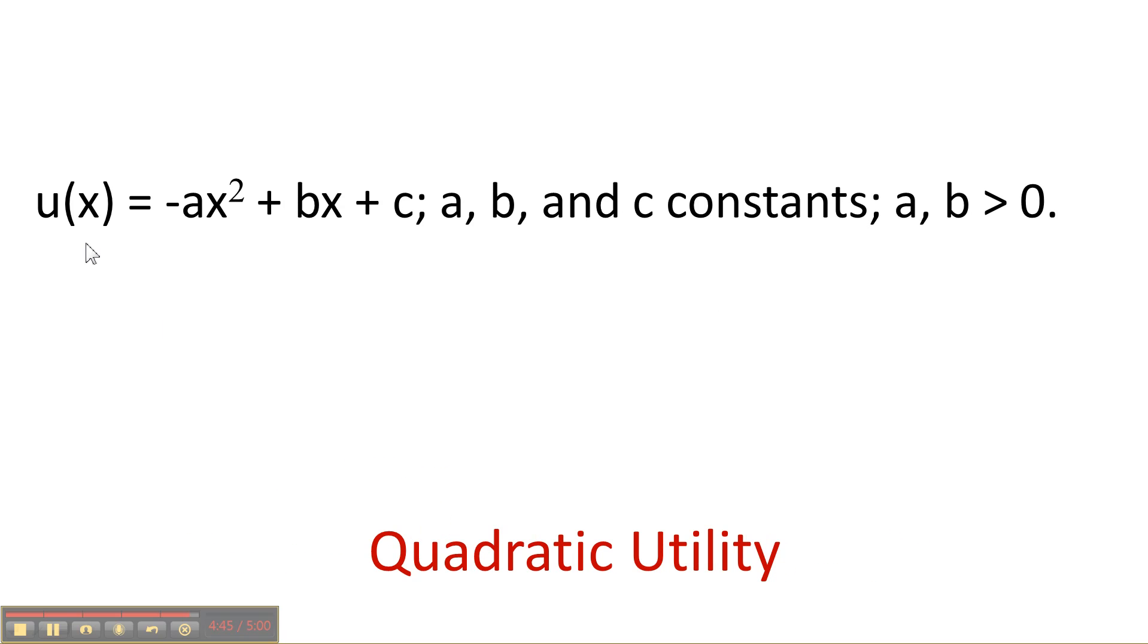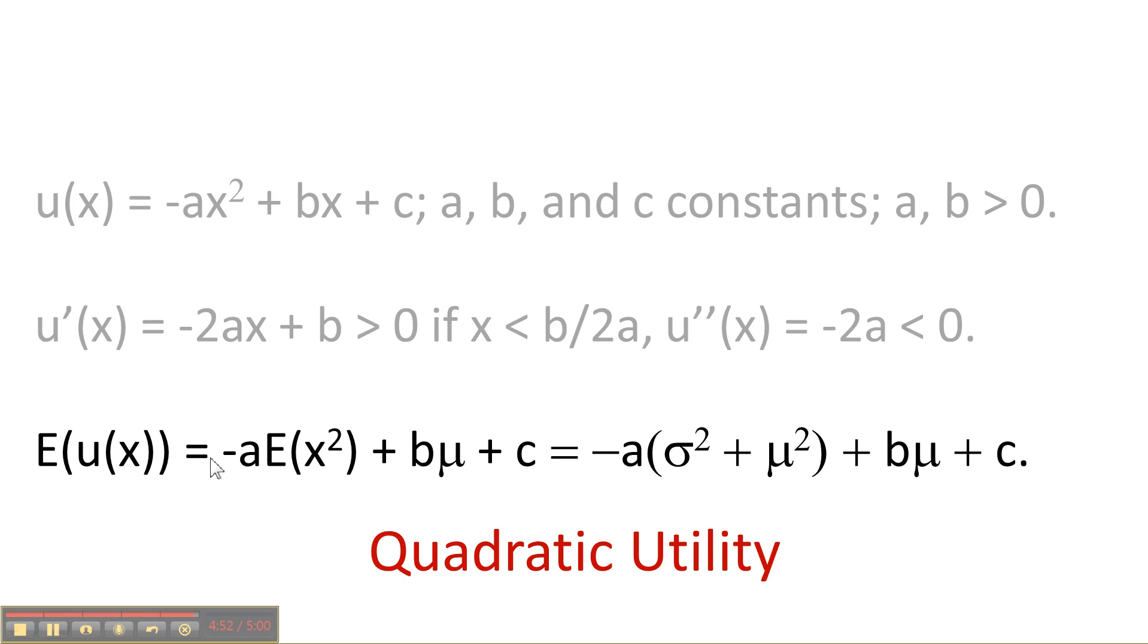Quadratic utility, you should understand, is a quadratic function in the outcome. And it has the value that you can represent utility in terms of the mean and the variance. So variance measures the risk.